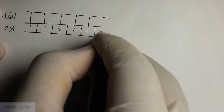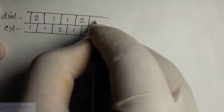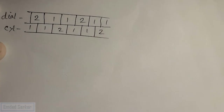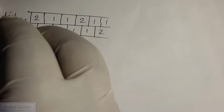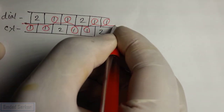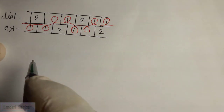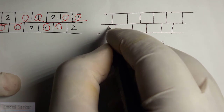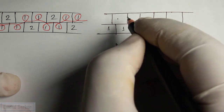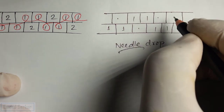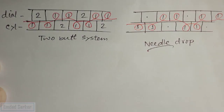In the case of dial needle: two, one, one, two, one, and then one. If we try to draw the course of two by two rib structure, this is the two by two rib structure with this needle arrangement. In the case of needle drop, this is the arrangement with the one-butt system.